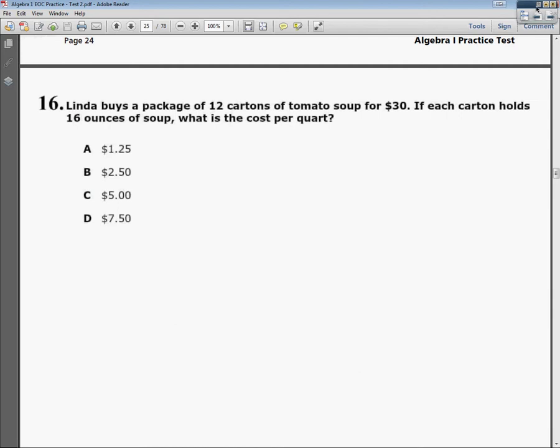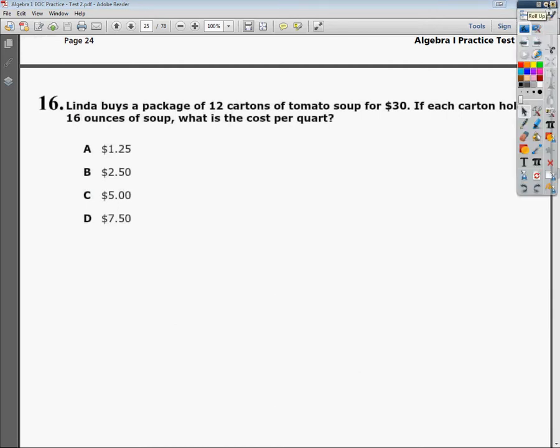Now, the reality is we have to do some conversion work here, otherwise it won't work at all. So what we know right now is that she spent $30 for 12 cartons. And if we know that each carton has 16 ounces, I'm going to go ahead and just convert the cartons to ounces really quickly. I'm going to do 12 times 16, and 12 times 16 is 192. So she spent $30 on 192 ounces.